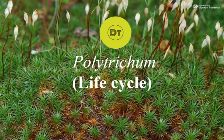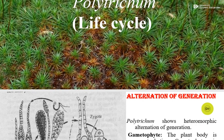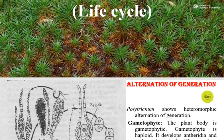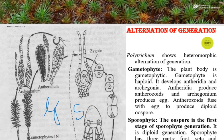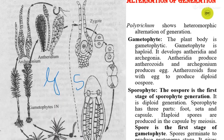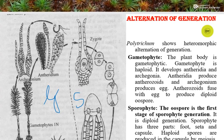Hello students. In this video we are going to learn about the life cycle of Polytrichum. The life cycle is also known as alternation of generation because two generations will alternate among themselves. And the two generations are known as gametophytic and sporophytic.